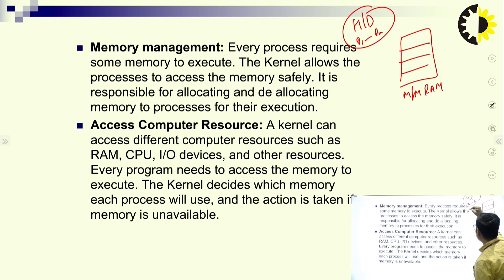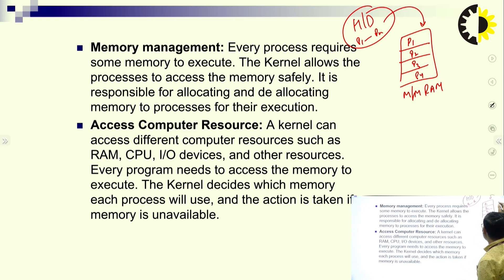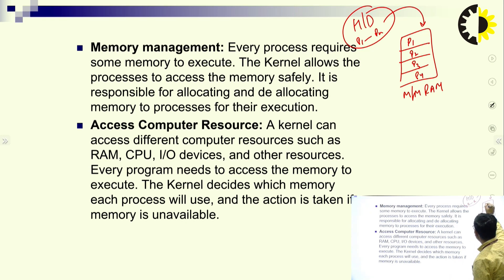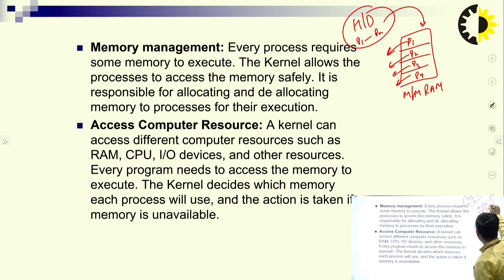For example, processes move from hard disk to main memory — this is a functionality of the operating system. Suppose inside this RAM we have taken three processes. These processes are ready for execution and waiting for the CPU. If the CPU is free, then from RAM we take processes one by one, or we use different approaches like a CPU scheduling algorithm to take different processes for execution on the CPU.